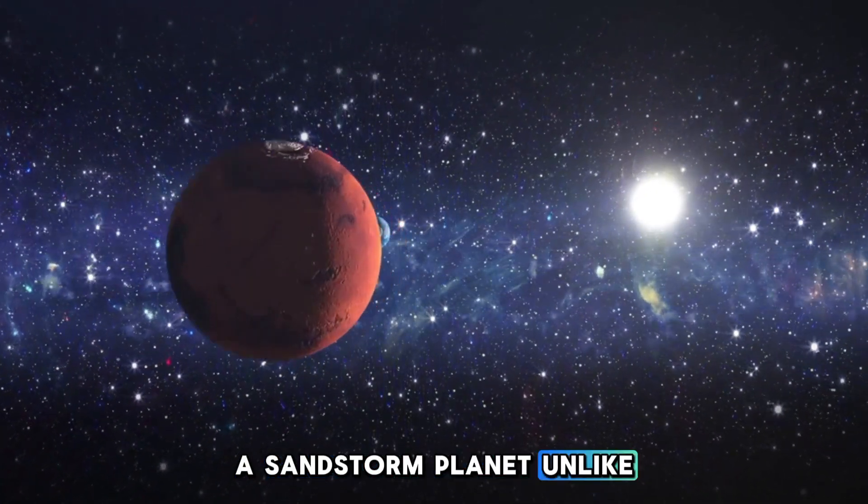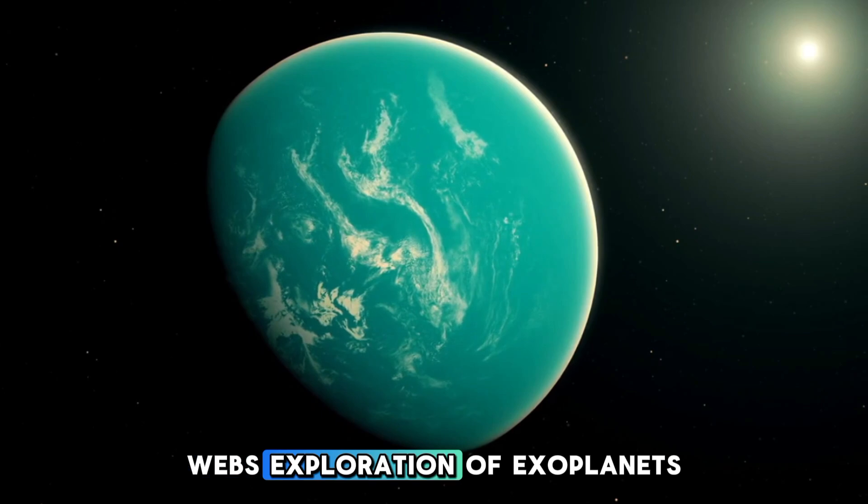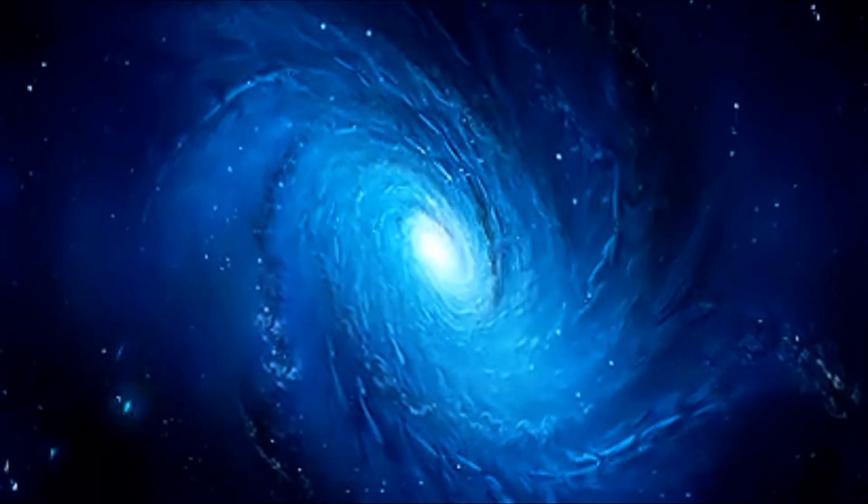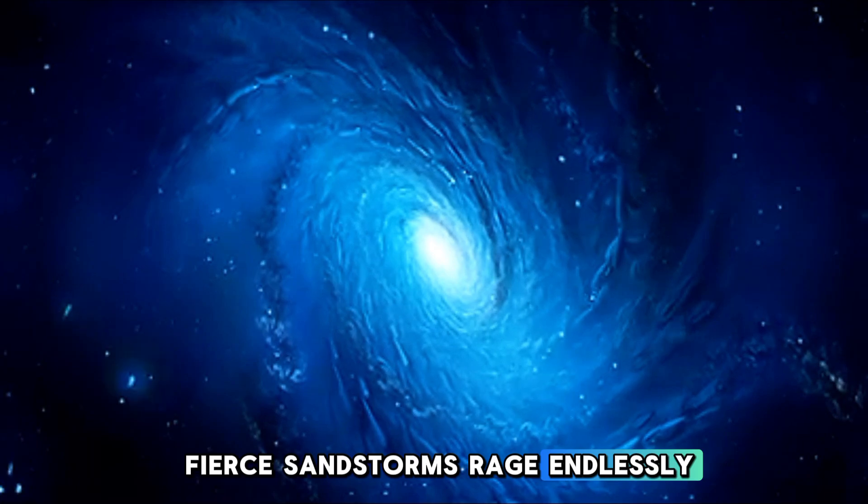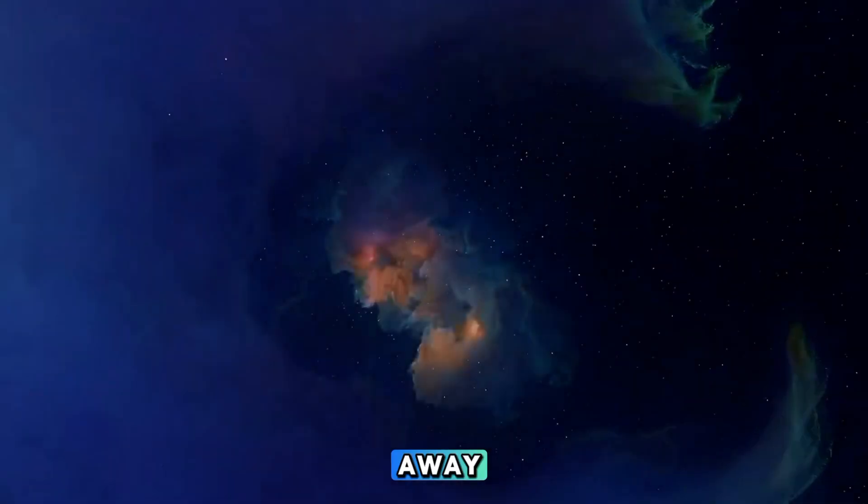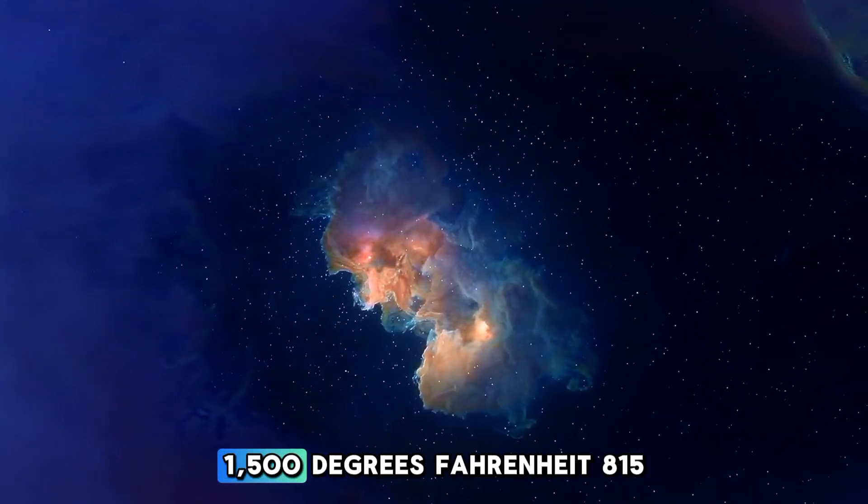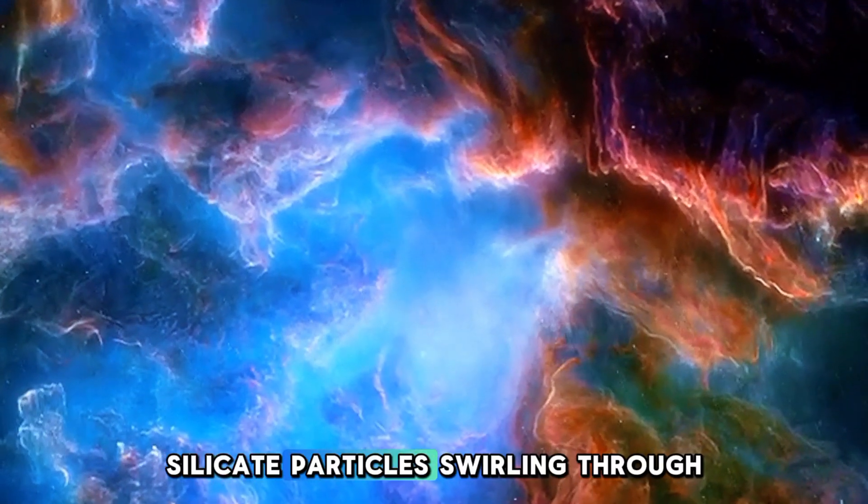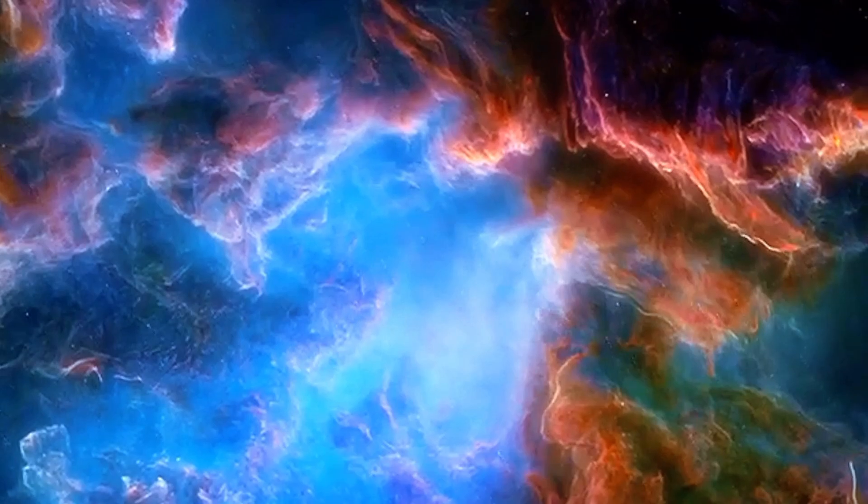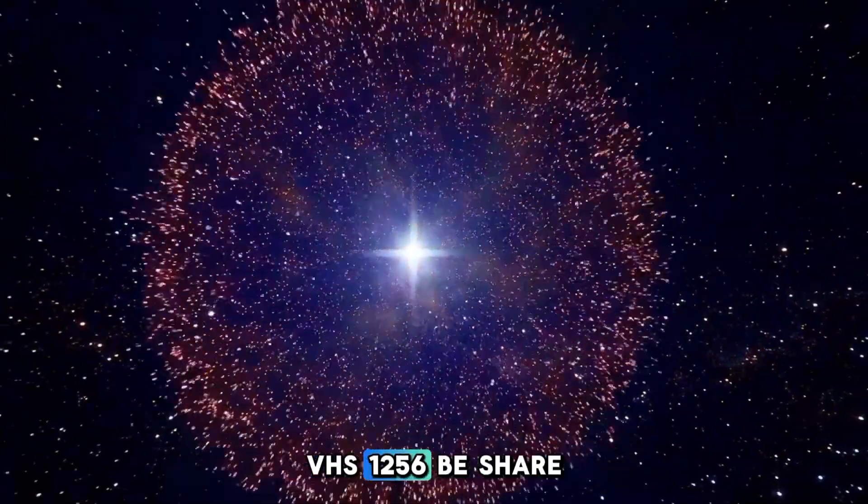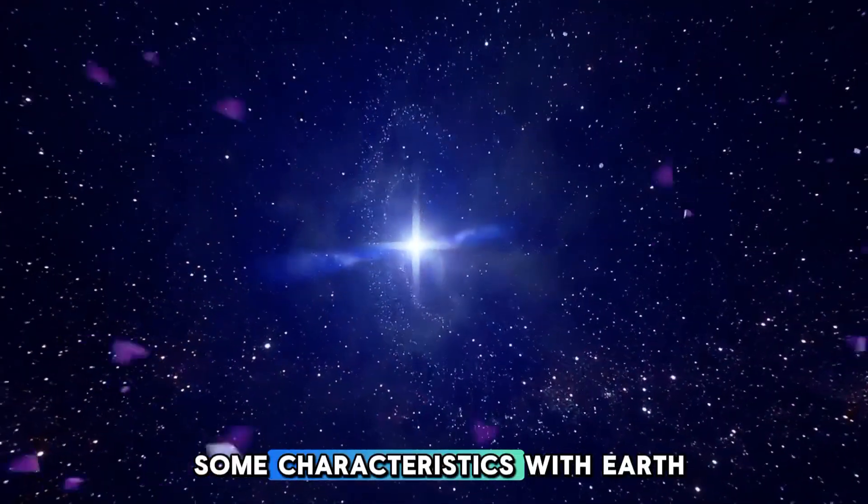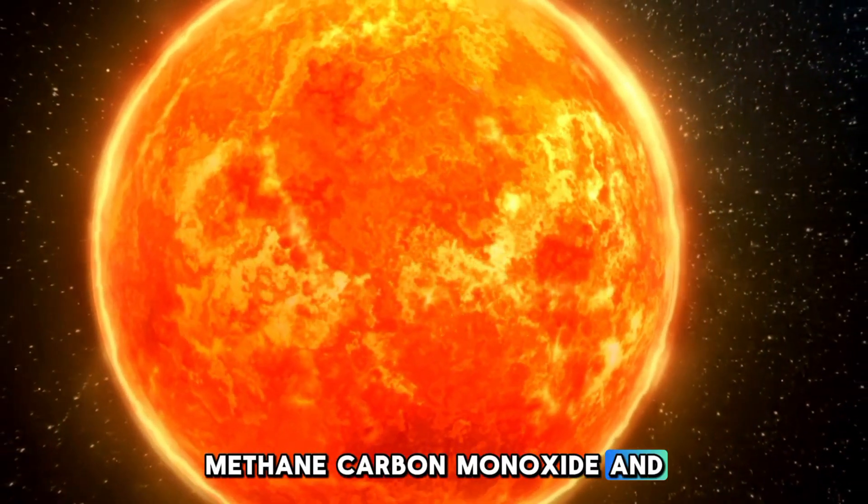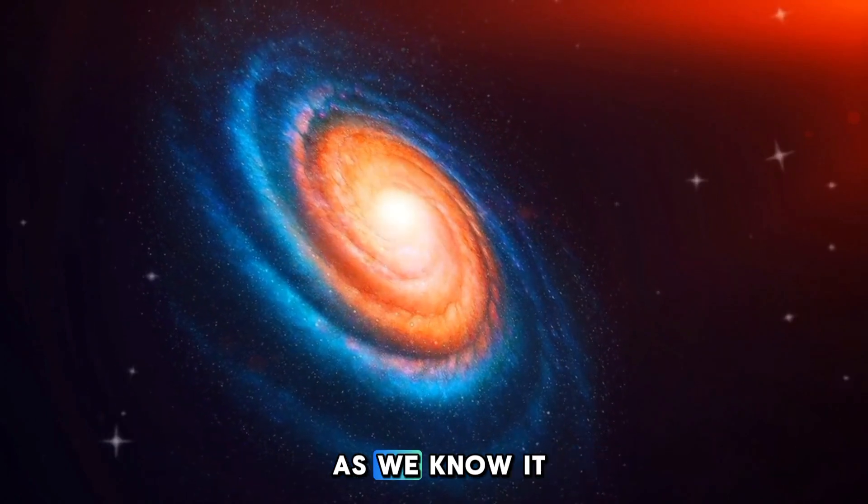A sandstorm planet unlike any other. Webb's exploration of exoplanets also led to the discovery of VHS-1256b, a distant world where fierce sandstorms rage endlessly. Located 40 light-years away, this planet experiences scorching 1,500 degrees Fahrenheit, 815 degrees Celsius winds, with tiny silicate particles swirling through its atmosphere. Despite its hostile environment, VHS-1256b shares some characteristics with Earth. Its atmosphere contains water, methane, carbon monoxide, and carbon dioxide, molecules crucial to life as we know it.